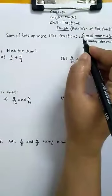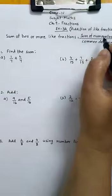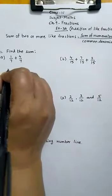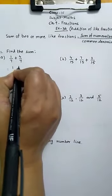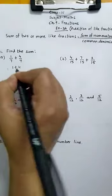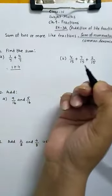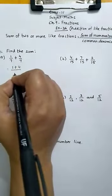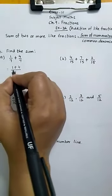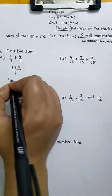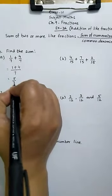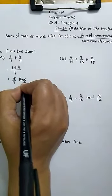So what we do according to the formula, first we have to add the numerators. Here numerators are 1 and 4. Add these two upon the common denominator. Here common denominator is 7. So 4 plus 1 is 5 upon 7. So 5 by 7 will be the answer.